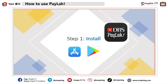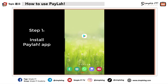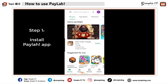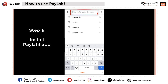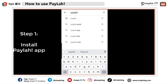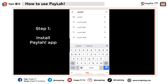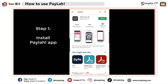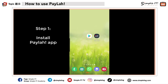Now I'm going to demonstrate how you can download PayLah. If you are using an Apple iPhone, go and find your Apple App Store. If you are using an Android phone, go and find your Google Play Store. I'm using an Android phone, so I'll click on the Play Store icon. At the top there is a search bar — I type P-A-Y-L-A-H to search for it, and it will display PayLah. I click the green Install button to proceed.